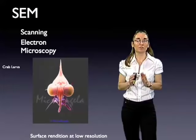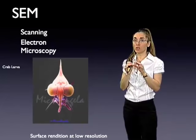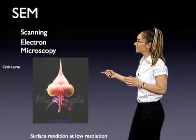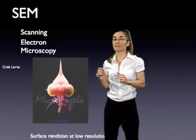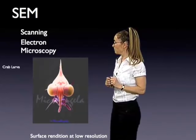Electron microscopy comes in two very different flavors. SEM, or scanning electron microscopy, is a method that uses focused beams of low-energy electrons to raster along a bulky object and gives you a low-resolution rendition of the surface of the object. This is an example of such an image — it's a crab larva, and it looks very pretty because it has added false color. But there's no color whatsoever in electron microscopy, so that's the first thing that you have to remember.